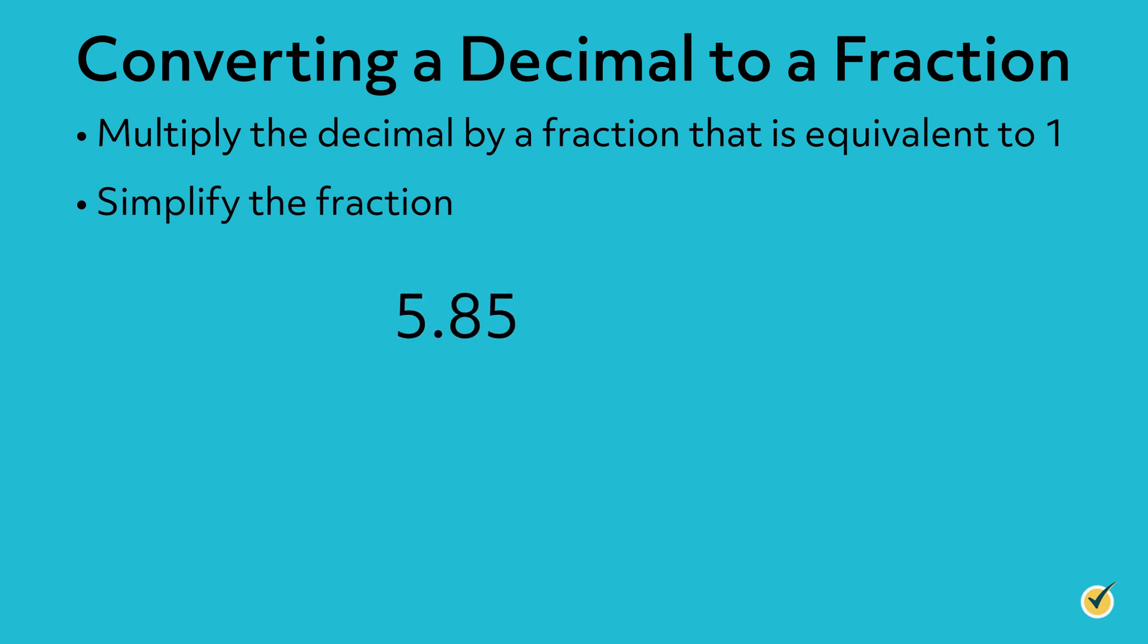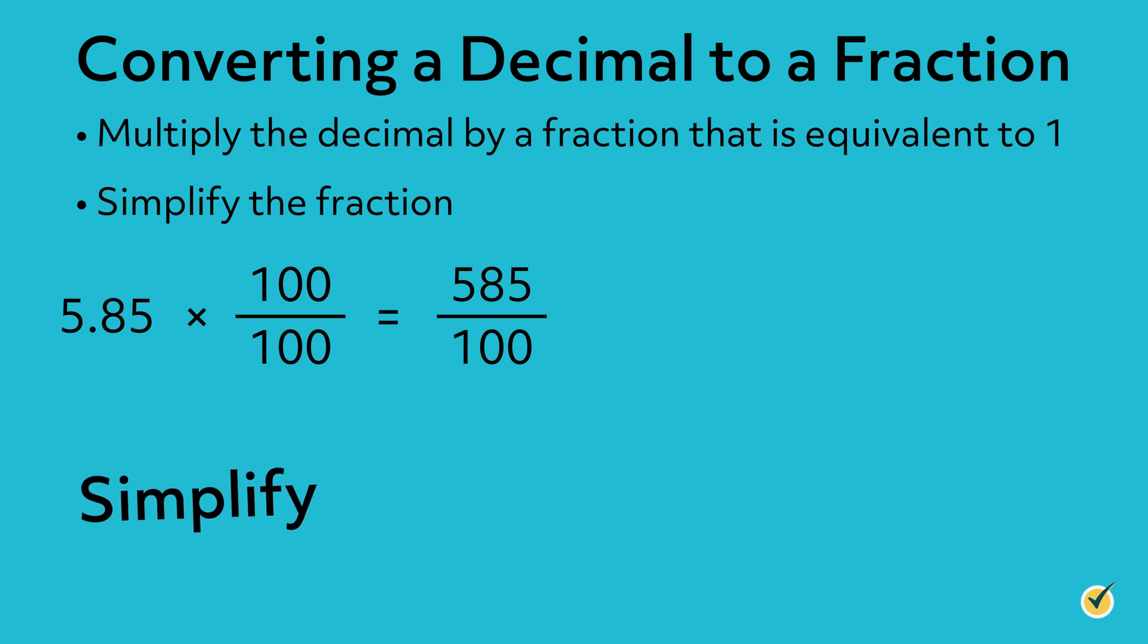Let's take a look at an example. We will convert 5.85 into fraction form. Since there are two numbers after the decimal, we will multiply 5.85 by 100 over 100. 5.85 times 100 over 100 is equal to 585 over 100. To simplify the fraction,